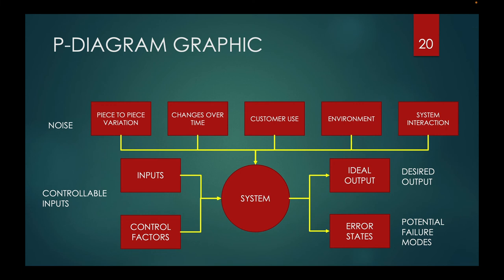It depicts uncontrollable inputs or noise factors. These are outside forces that can influence the design and are not under control of the design team. These include piece-to-piece variation in the parts, environmental conditions that the system will see, how the customer will use the system, changes to the system over time, and the system's interaction with other systems. It depicts error states or undesirable outputs, and these undesirable outputs could be called potential failure modes.